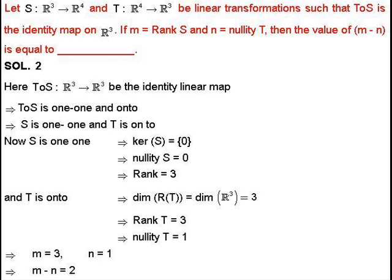By the rank-nullity theorem, the dimension of the domain space equals the dimension of the range space plus the dimension of the null space. Since S maps R³ to R⁴, dimension of R³ equals rank of S plus nullity of S. Here dimension of R³ is 3 and nullity of S is 0, so rank of S equals 3. That is, M equals 3.